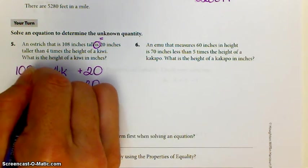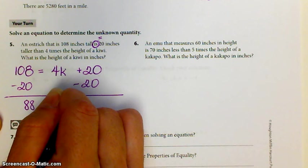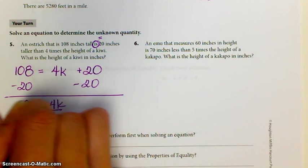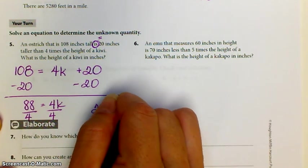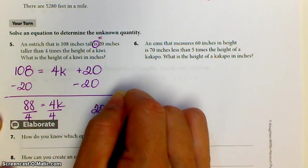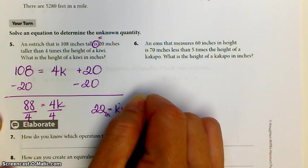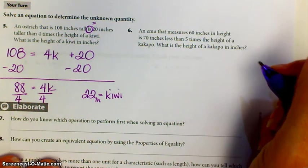We're going to use the scale from our map as a fraction. Map distance over actual distance equals map distance over actual distance. However we set it up, we've just got to do both fractions the same way. Map over actual equals map over actual. We know that the actual distance between those two cities is 11.25.